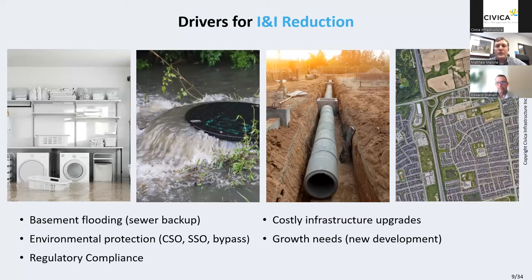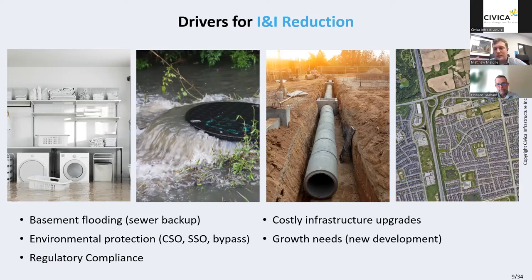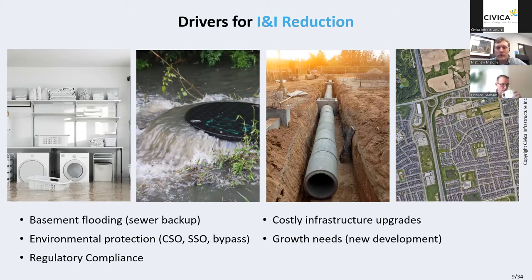There are a number of drivers for I&I reduction: basement flooding and sewer backups are key, as well as environmental protection — reducing combined sewer overflows, sanitary sewer overflows, and plant bypasses. If we try to accommodate excess flows, we need bigger pipes, bigger pumping stations, bigger treatment plants — costly infrastructure upgrades. There's also growth needs: accommodating new development into existing infrastructure, whether greenfield tapping into existing systems or intensification. And regulatory compliance — in Ontario the MECP CLI ECA regulations set design criteria.